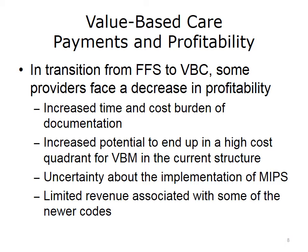A key component of MIPS is an adjustment in payments based on value, so some providers will lose a percentage of their billings and others will gain a percentage based on their MIPS composite performance score, starting in 2019. A third reason concerns the limited revenue associated with some of the newer codes. Even though CMS and other payers are starting to allow providers to bill for certain activities such as chronic care management, the payments can be low. Using the example of chronic care management, providers are currently allowed to bill only $42 per patient per month to perform these services.